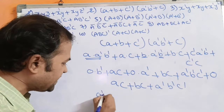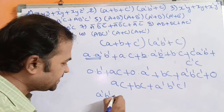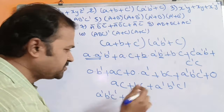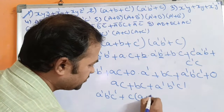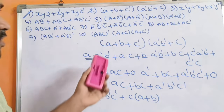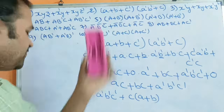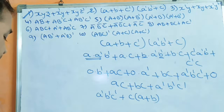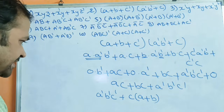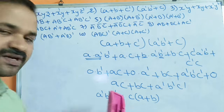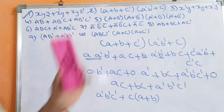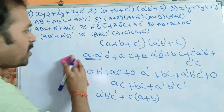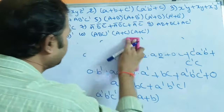Writing a'b'c' first, then observing ac + bc: c is common, so c(a + b). After simplification, the solution for the second problem is a'b'c' + c(a + b).